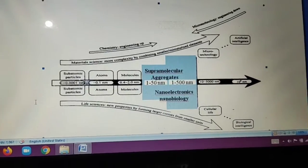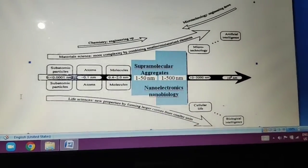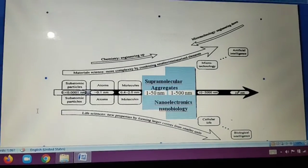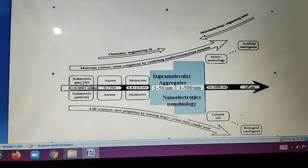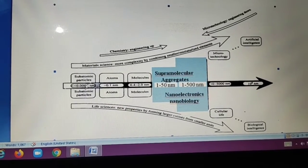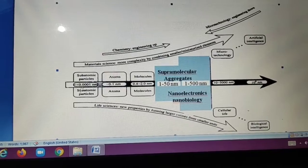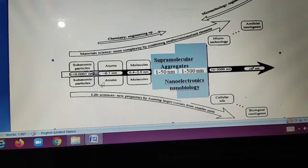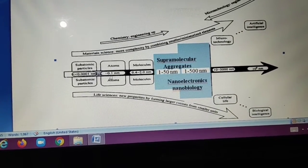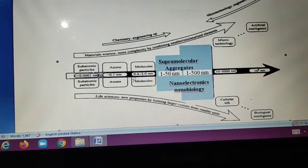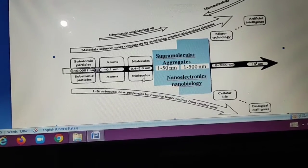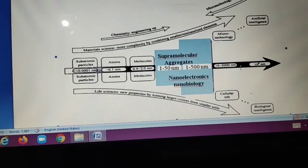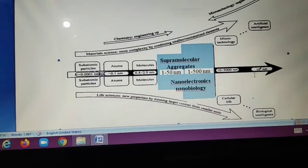Like this is the figure. Supramolecular aggregates. 1 to 50 nanometer. And 1 to 500 nanometer. Nanoelectronics. Nanobiology. This subatomic particle. Size is less than 0.0001 nanometer. Subatomic particle. Atom having 0.1 nanometer. And molecule having 0.4 to 2 nanometer. Nanometer. Supramolecular aggregates. Supramolecular aggregates 10 to 500 nanometer. 5,000 nanometer. 10 to the power 8 nanometer. Material science.